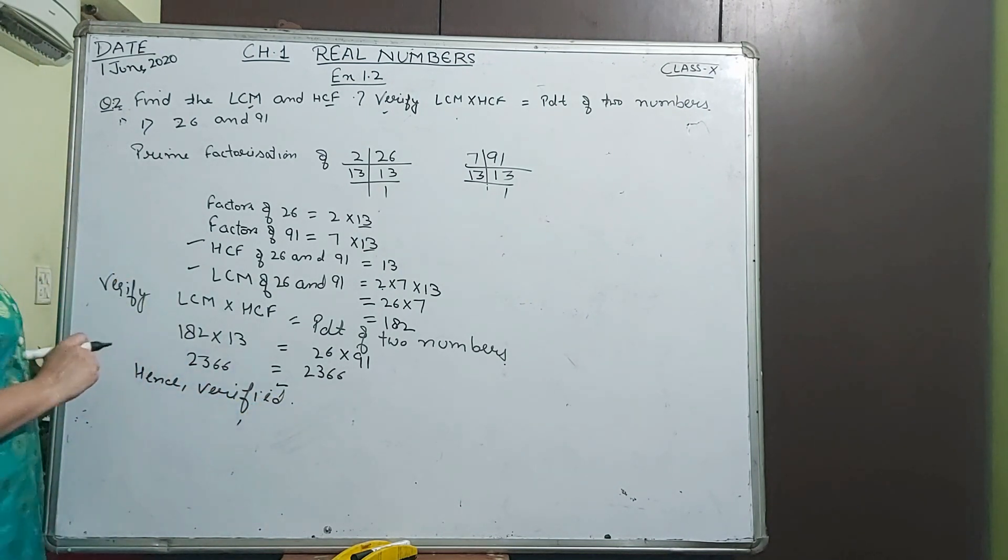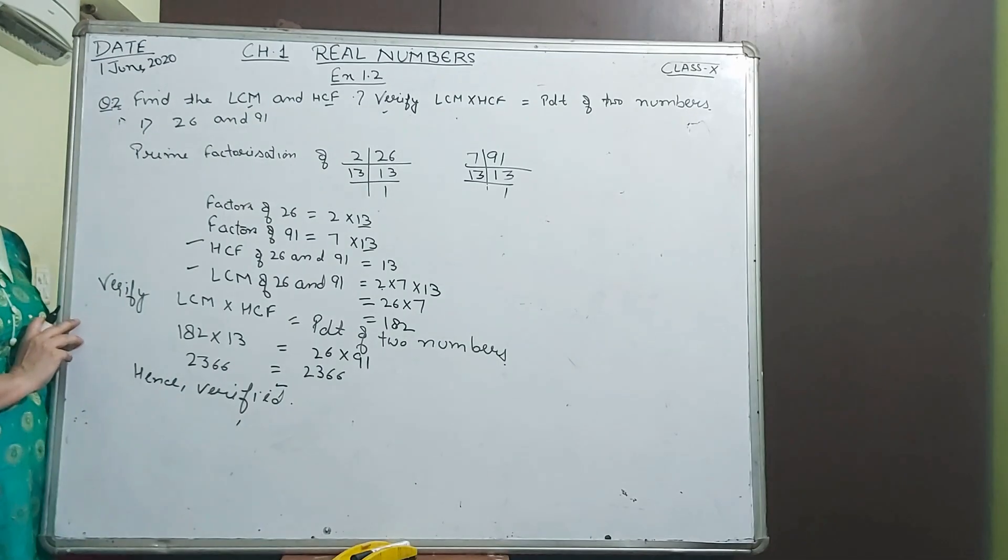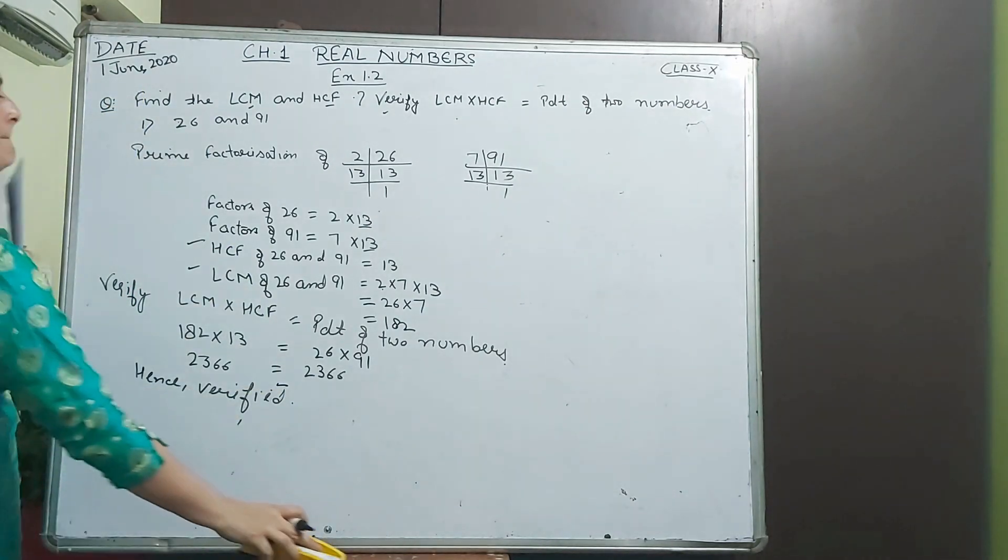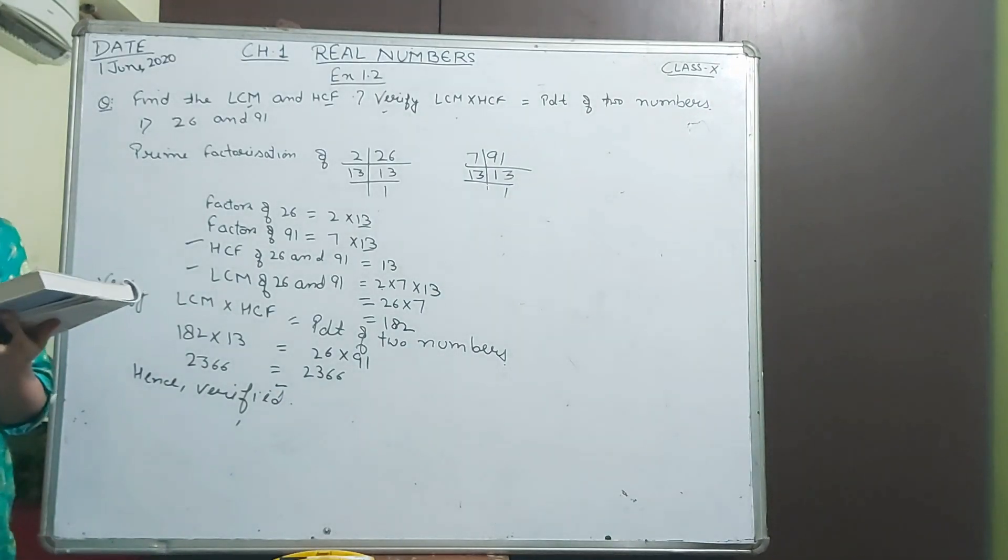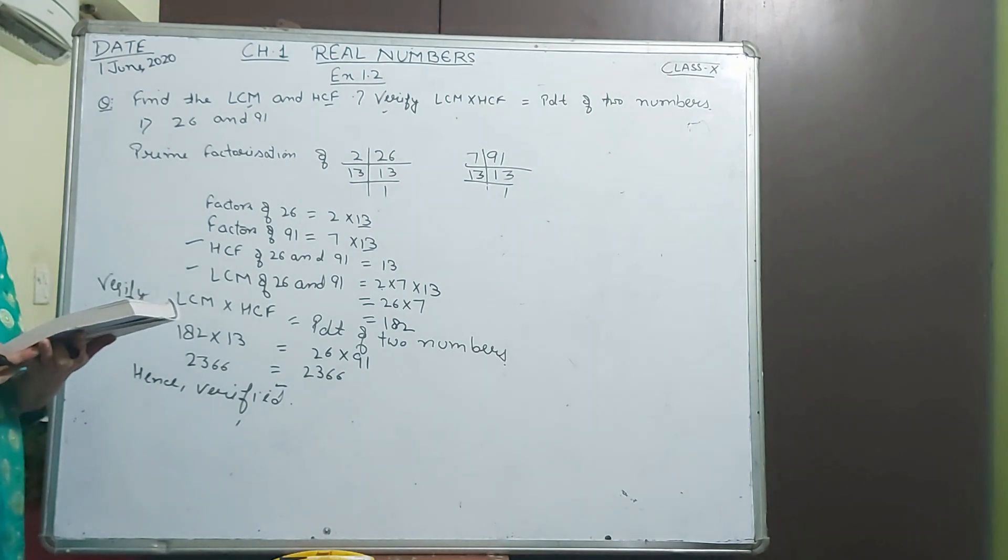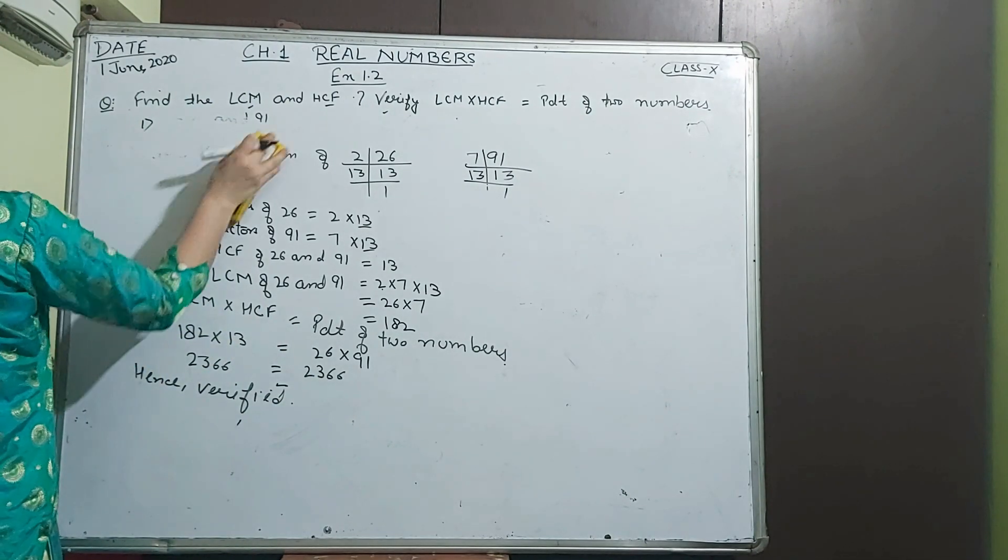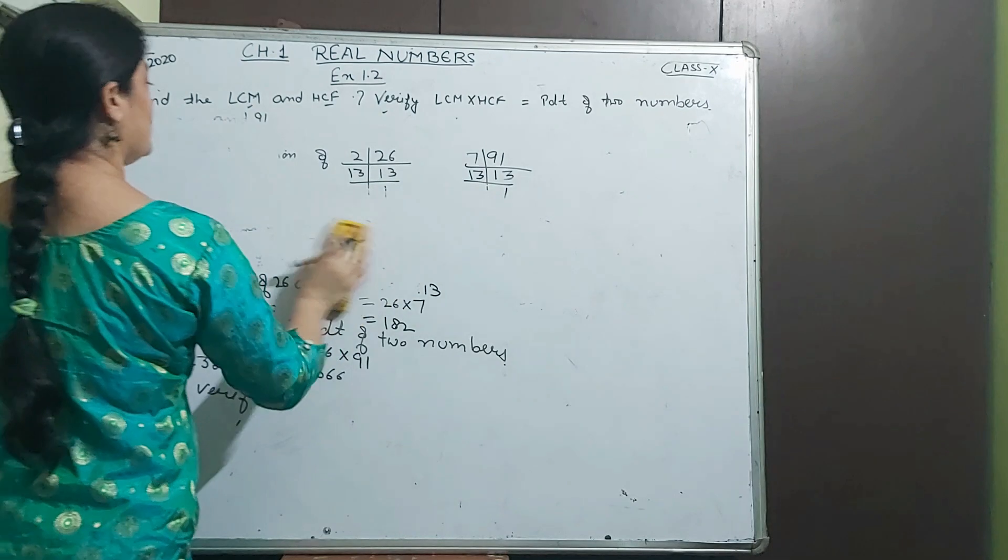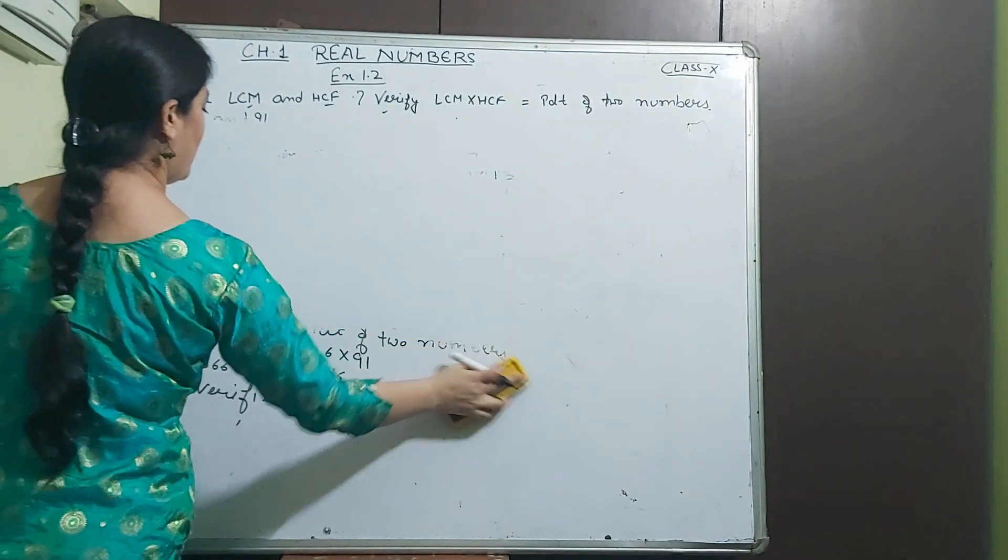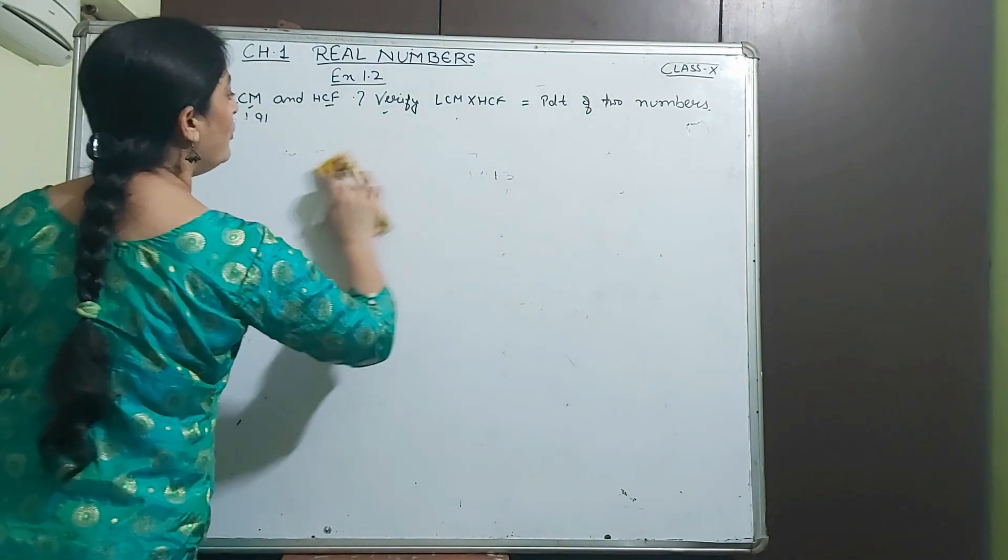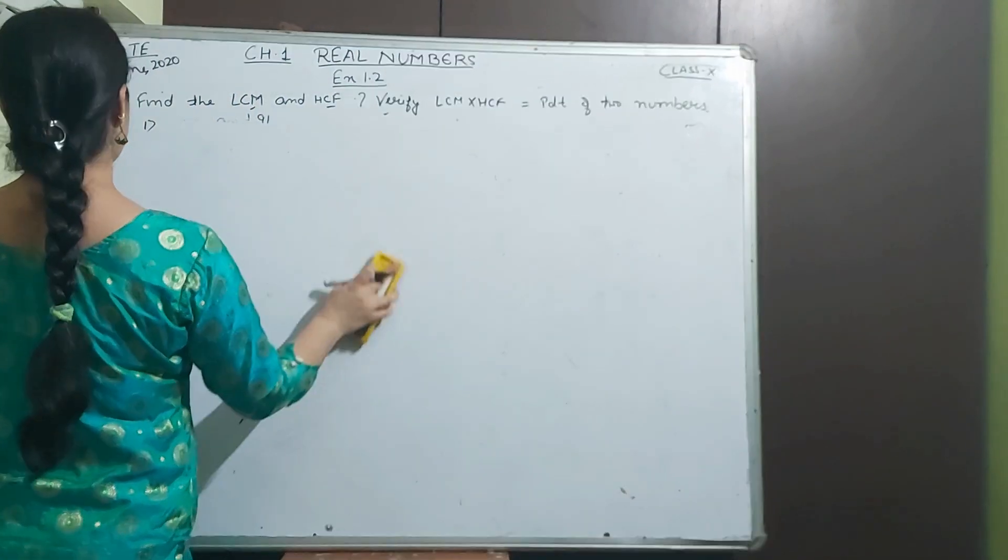LCM into HCF equals product of two numbers. LCM is 182, HCF is 13, and the two numbers are 26 and 91. When we multiply these numbers we get 2366 on both sides, the same result. Hence verified.